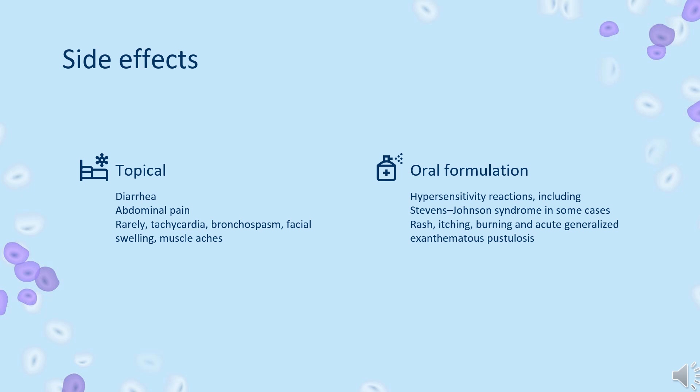Side effects: Bitter taste and nausea are more common than most other adverse effects. The oral suspension form produces a number of adverse effects, including but not limited to diarrhea and abdominal pain. Rarely: tachycardia, bronchospasm, facial swelling, and muscle aches.